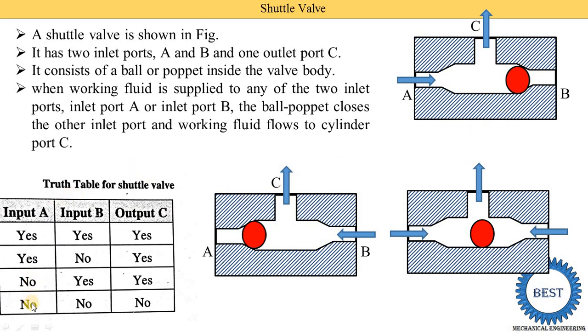The fourth case in the table is when no fluid is supplied at input A and no fluid is supplied at input B either — then there is no output at C. This is a simple logical result.